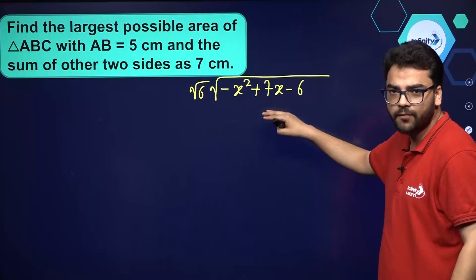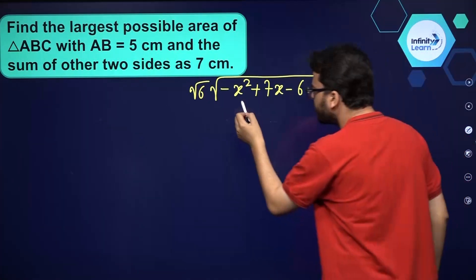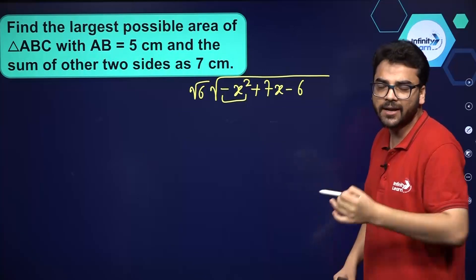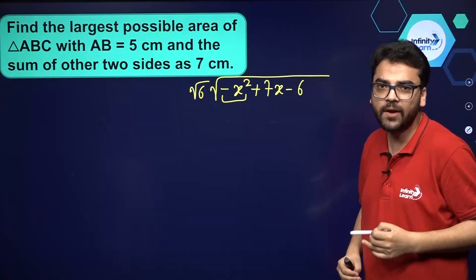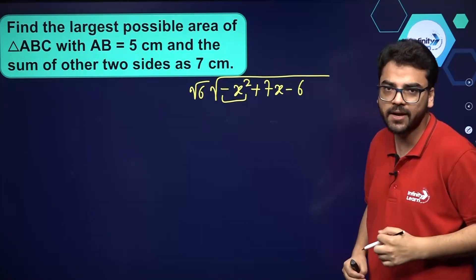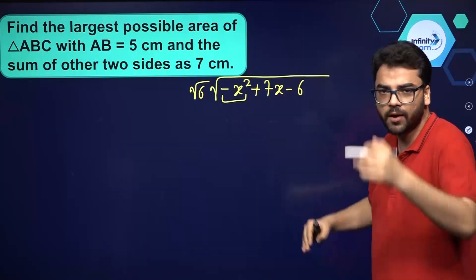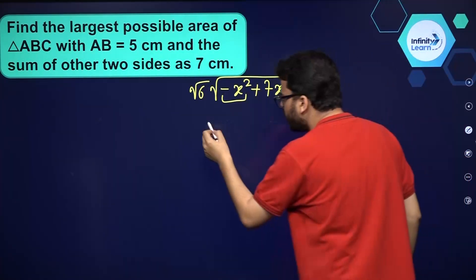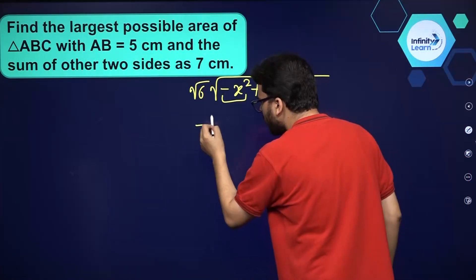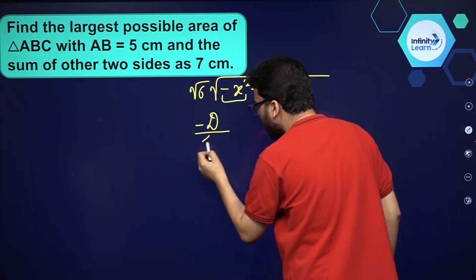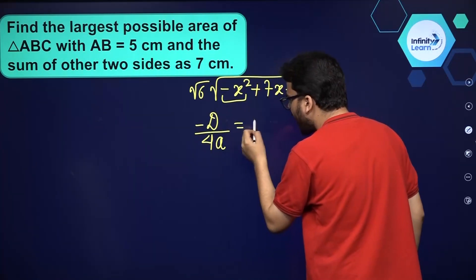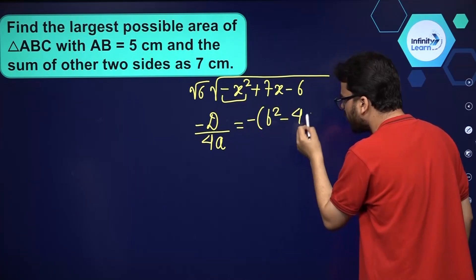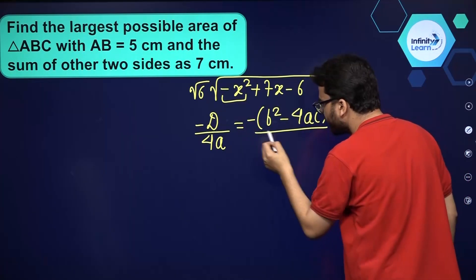The coefficient of x² is negative, so this quadratic polynomial will have a maximum value only, because it represents a downward-opening parabola. Its maximum value is equal to −D divided by 4a, where D is the discriminant b² minus 4ac, divided by 4a.